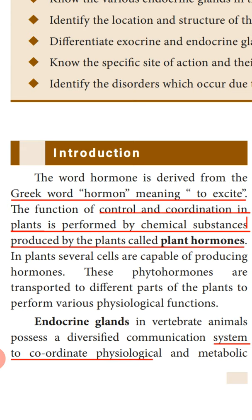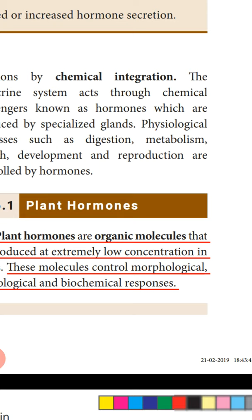These plant hormones are produced in several cells of the plant. In plants, several cells have the ability to synthesize plant hormones. These phytohormones — 'phyto' means plant — are transported to different parts of the plant to perform various physiological functions. Most cells in the plant can synthesize one or another type of plant hormone, and these hormones are transported from one place to another to perform their function.